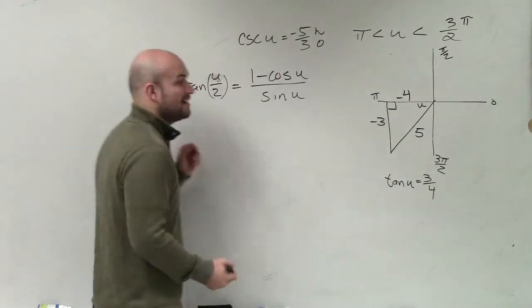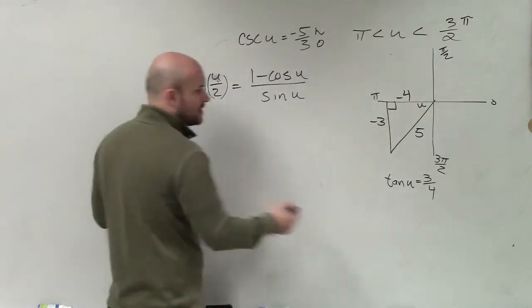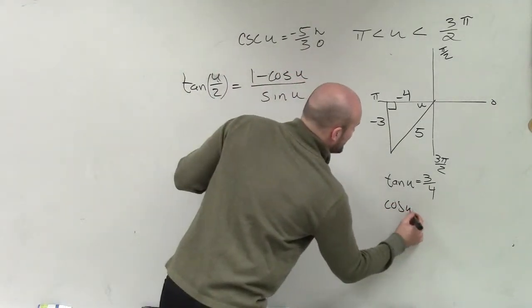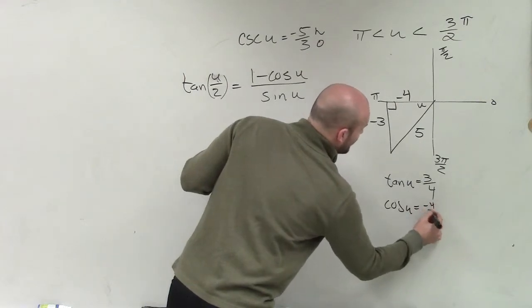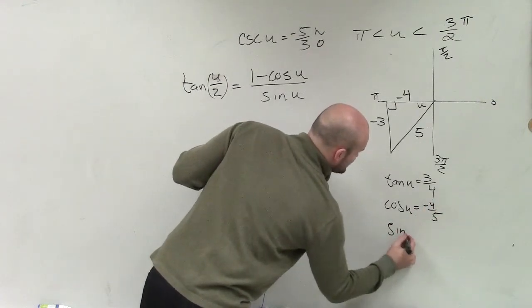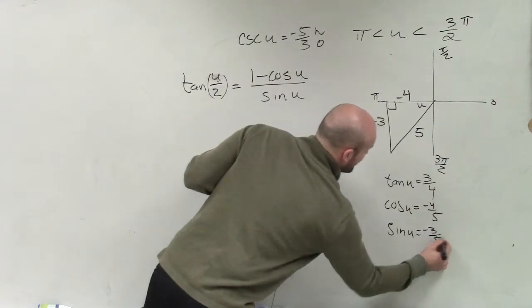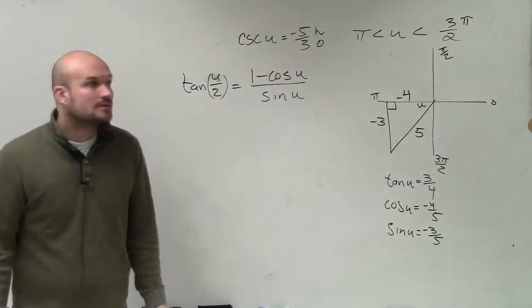So now, I don't care about tangent of u then. All I need to know is what cosine and sine of u are. So cosine of u equals negative 4 over 5, and sine of u equals negative 3 over 5. Do you guys agree with that?